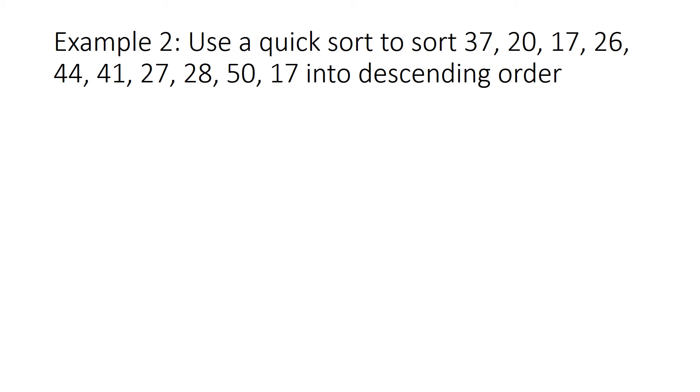So example 2: use the quicksort algorithm to sort 37, 20, 17, 26, 44, 41, 27, 28, 50, and 17 into descending order. So we're going to write out our list again for clarity and now we're going to choose our midpoint. That's our pivot.